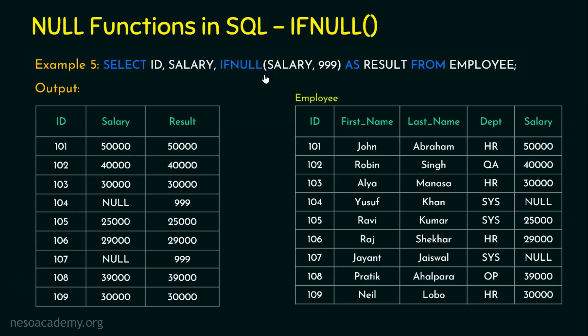IFNULL replaces the null value with a specific value — whatever is mentioned in the second argument. If the first argument is null, it is replaced with that value; if the first argument is not null, the first argument itself is returned. I hope all the null functions are clear. Before signing out, please note: before implementing or trying all these null functions in a database, check the documentation to confirm whether that null function is supported by that particular software. I hope the session was informative — thank you for watching.